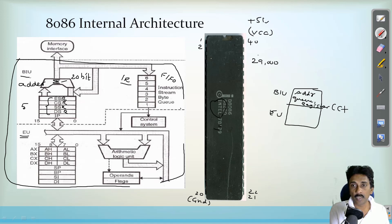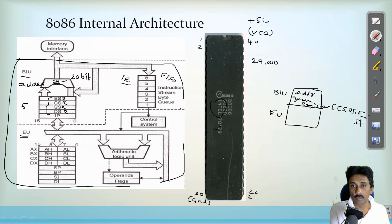Like code segment, data segment, extra segment and stack segment and instruction pointer. These are the main units which are involved in the bus interface unit.